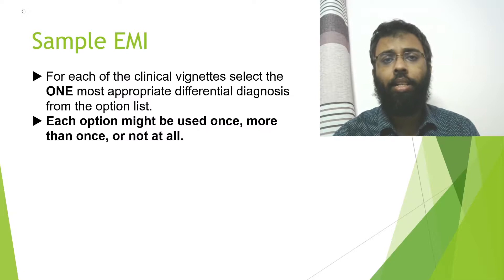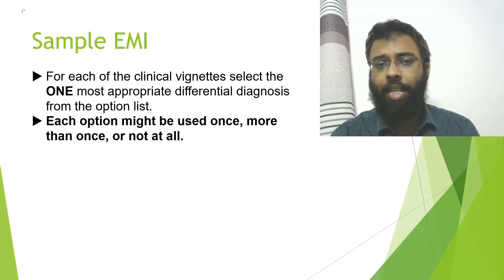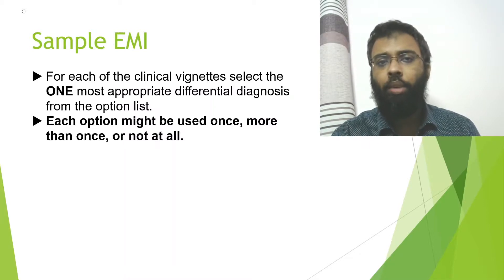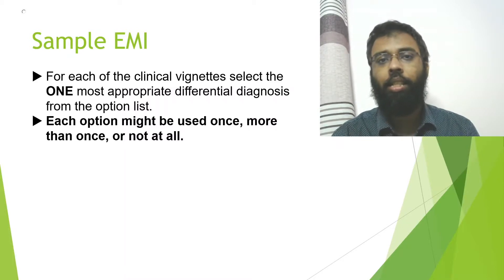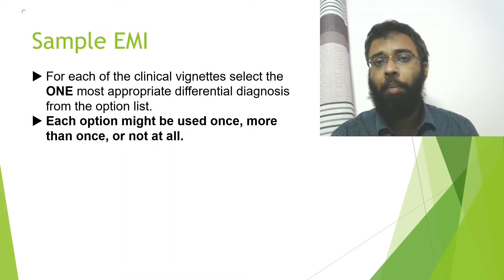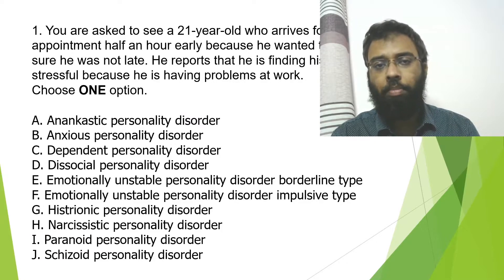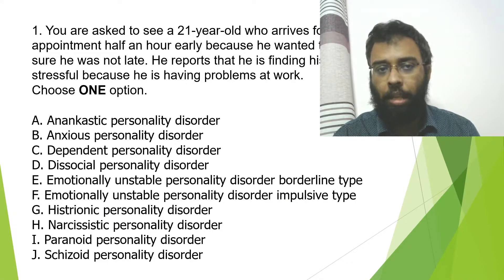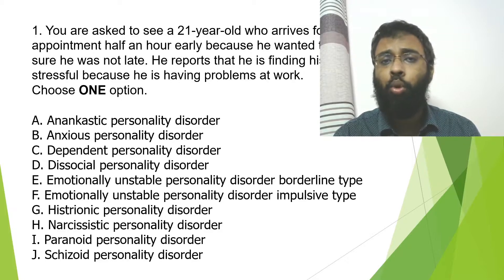What is slightly different is the EMI — extended matching items — which will be one third of the exam. You will first see some instructions, for example: for each clinical vignette, select the most appropriate differential diagnosis from the options. Each option might be used once, more than once, or not at all. Then comes the question stem, such as being asked to assess a 21-year-old.